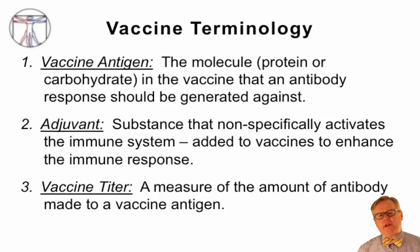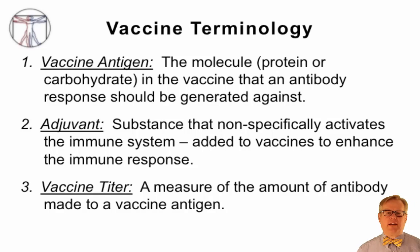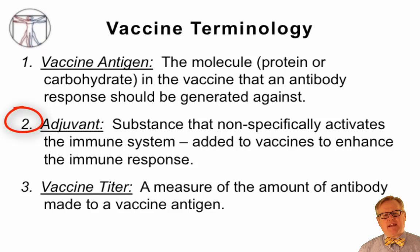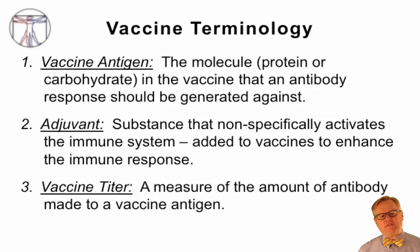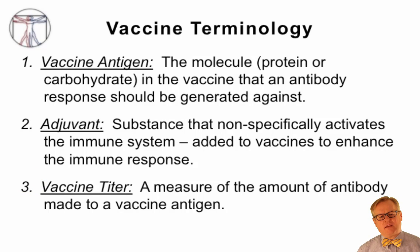There is some important terminology to know. First, vaccine antigens: the antigen is the molecule, the protein or the carbohydrate in the vaccine that an antibody response should be generated against. Some vaccines will have multiple antigens. Second, adjuvant: a substance that non-specifically activates the immune system, added to vaccines to enhance the immune response. Third, vaccine titer: a measure of the amount of antibody that is made to a vaccine antigen.